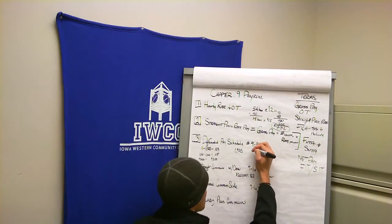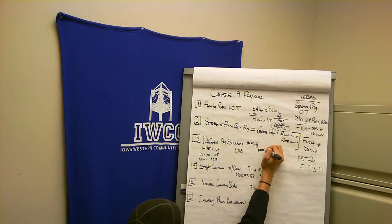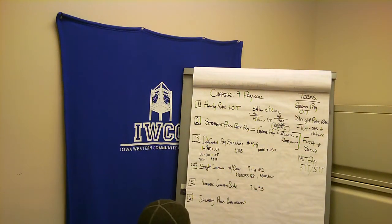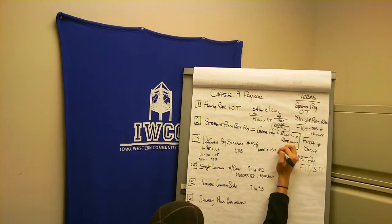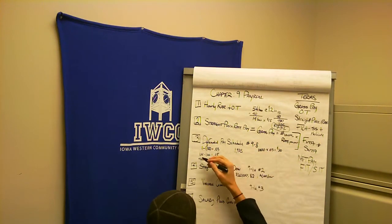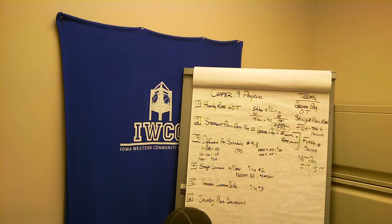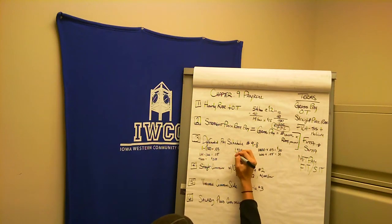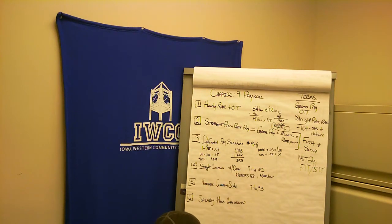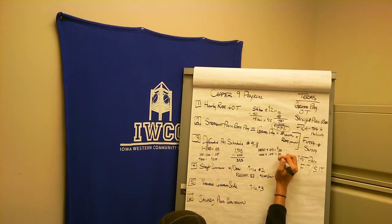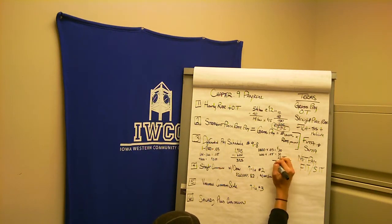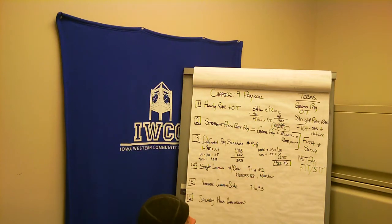What pay would that be? We have 1,000 units at 3 cents, so that's $30. Then another 600 units at 5 cents, which is another $30. Then 325 units above 1,600 at the 7-cent rate, which is $22.75. Adding these together, you get $82.75. That is what you'd get paid for producing 1,925 units.